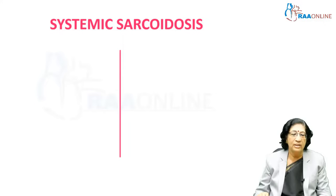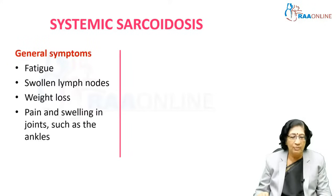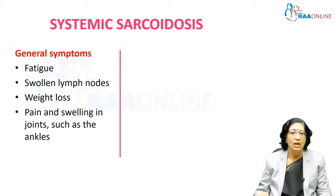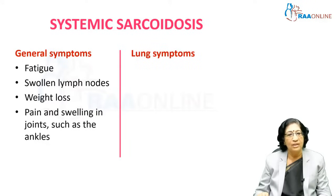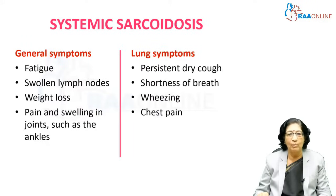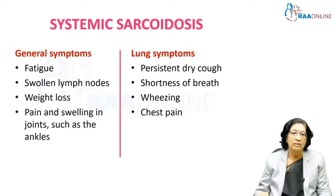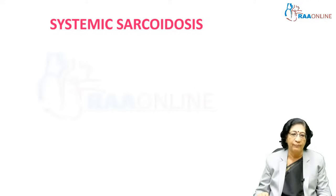The systemic symptoms include general symptoms such as fatigue, swollen lymph nodes in the neck, weight loss, and pain and swelling in the joints such as the ankles. Lung symptoms may predominate with persistent dry cough, shortness of breath, wheezing, and chest pain.